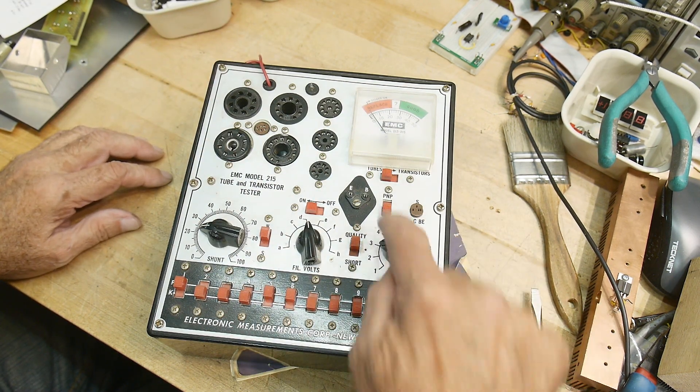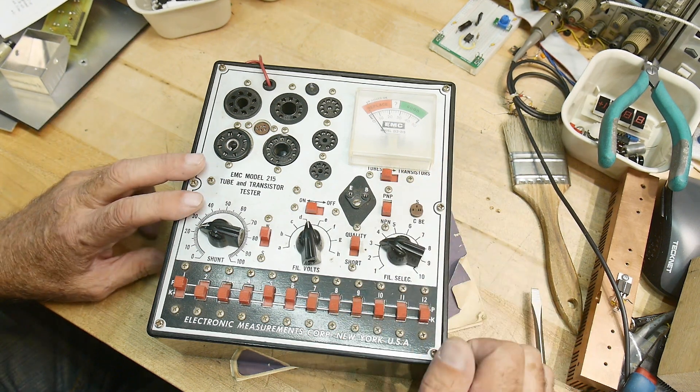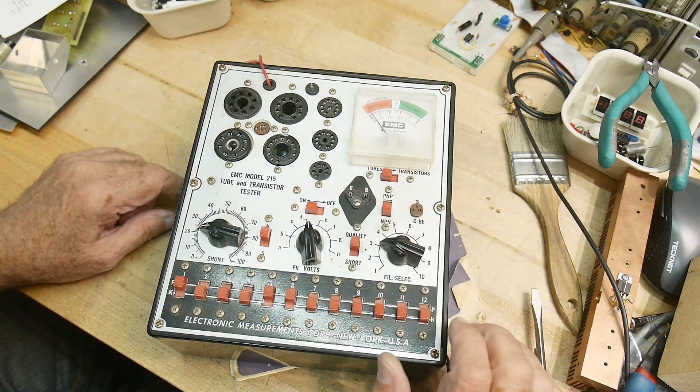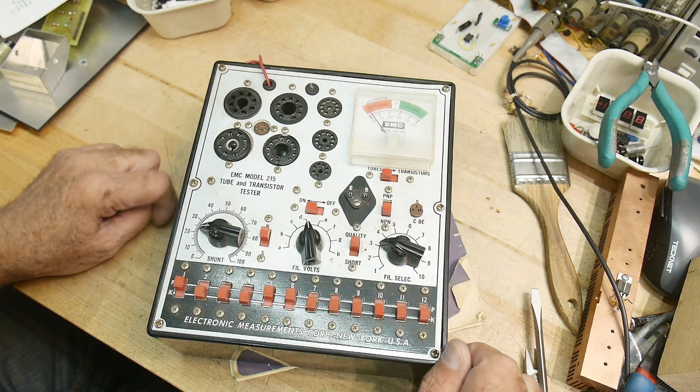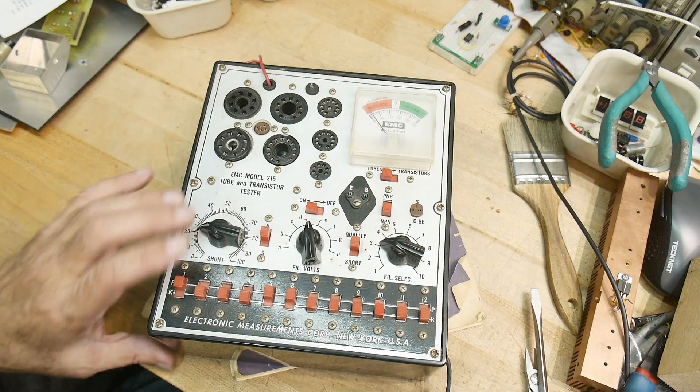All right. So this one has all the same kind of switches and stuff and different sockets and things. This one actually has a transistor tester in it. NPN, PNP, tubes and transistors. That's pretty spiffy even for TO3. Quality and shorts. On, off. I'm letting it warm up if it needs to be warmed up.